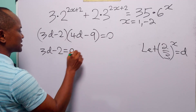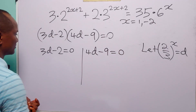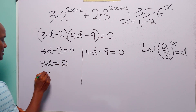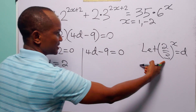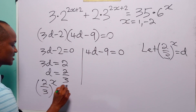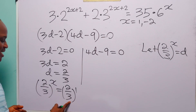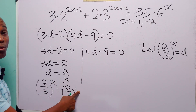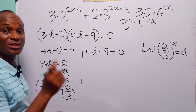From (3d minus 2)(4d minus 9) equals 0, either 3d minus 2 equals 0 or 4d minus 9 equals 0. From the first: d equals 2/3. Since d equals (2/3) to the power x, we have (2/3)^x equals (2/3)^1. Equating exponents gives x equals 1 — exactly the same root as from the first method.